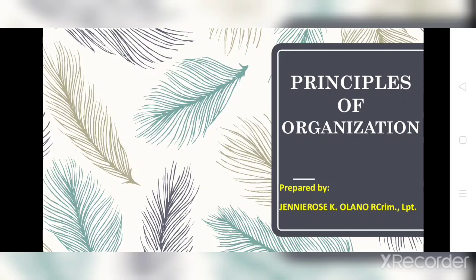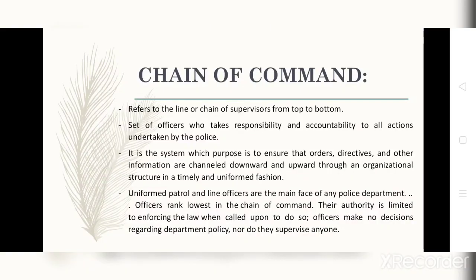First, we have the chain of command. Chain of command refers to the line or chain of supervisors from top to bottom. From the word chain — chain means continuous, or a chain is a sequence or a continuous flow of work. Chain of command is also a set of officers who take responsibility and accountability for all actions undertaken by the police officers.